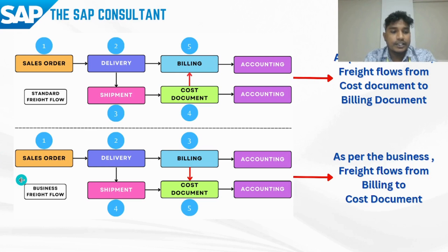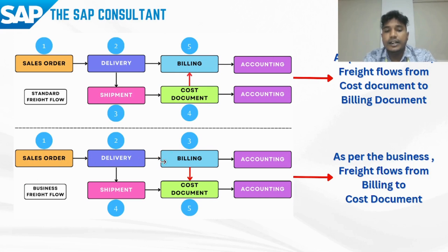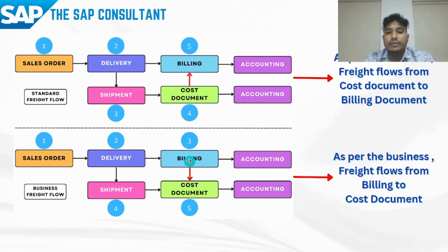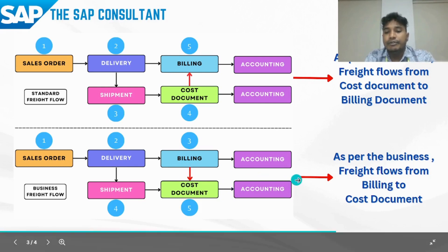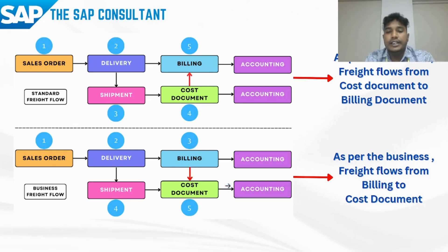In the customized functionality, the process would be different. The sales order is created, then delivery is created, then billing is created, and in billing the freight charges are applied. Then, with reference to the delivery, the shipment document is created. In the cost document, the system has to bring the freight conditions from the billing document into the cost document, and then the amount has to be settled to the vendor. This is the typical business requirement which has to be met in SAP.